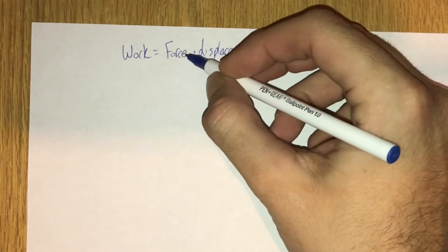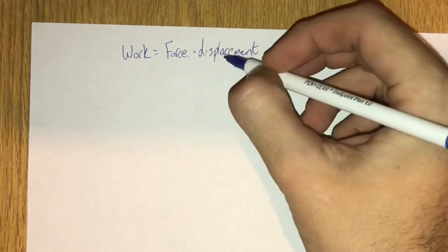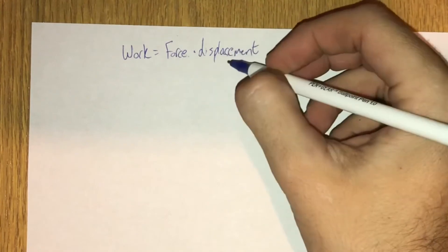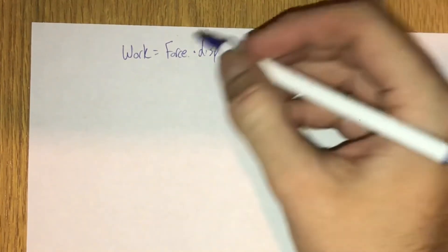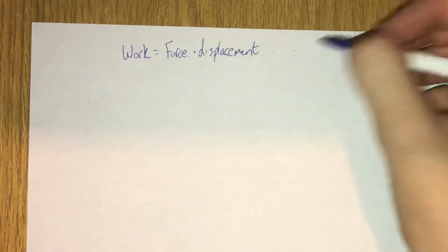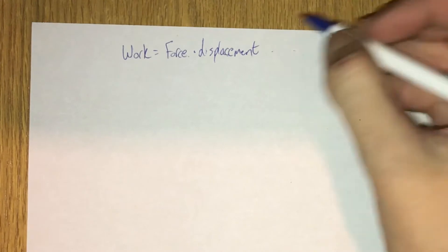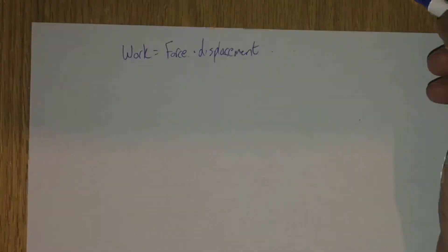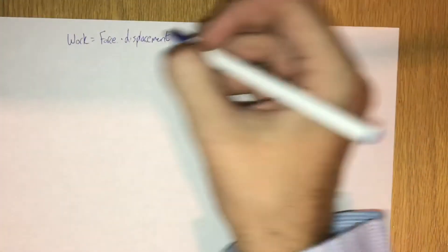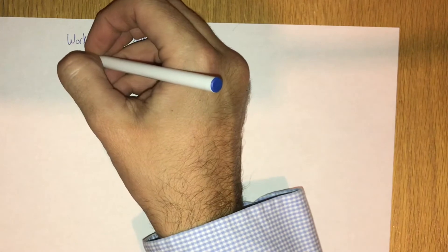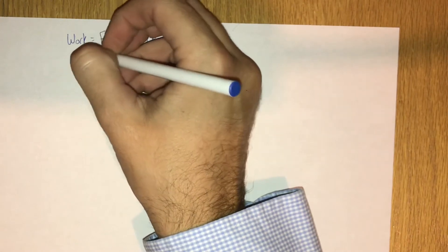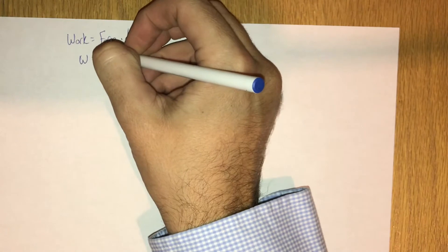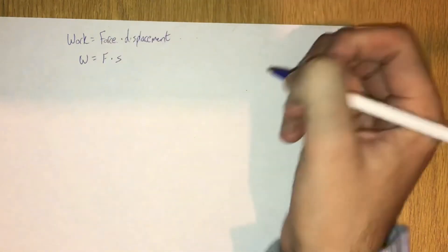But if all of the force is acting in the direction of displacement, then the angle between them would be zero, and the cosine of zero is one, and the equation just simplifies to this. So we'll consider the case where all of the force is acting in the direction of displacement. Here we'll use the symbol w for work, and that equals force, and I'll use the letter s for displacement.